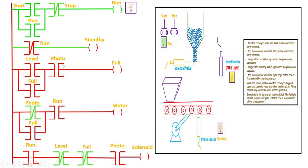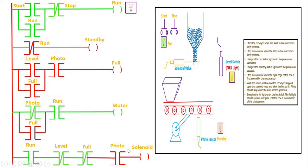Once run is energized, checking again — run is present, so that contact is energized. Because photo was already in normally closed position, the motor rung gets energized and the motor starts rotating. Another contact of run, using the same address, also gets energized. The conveyor starts moving, the box starts moving, and it comes to the position as indicated in the animation. Once it reaches that point, the photosensor senses it and goes high — the photosensor gets activated.